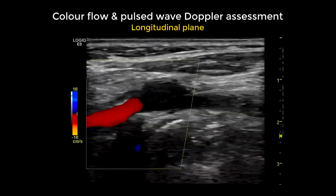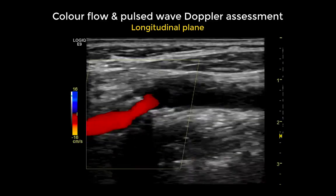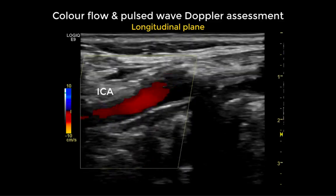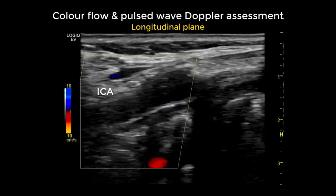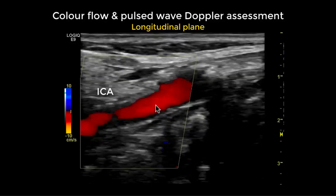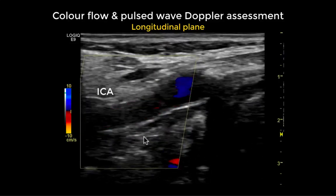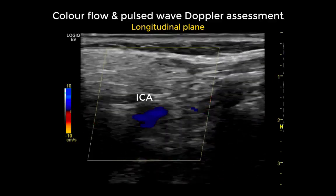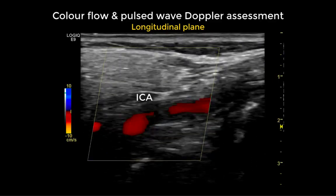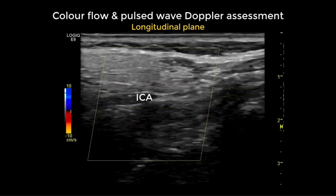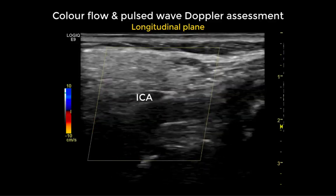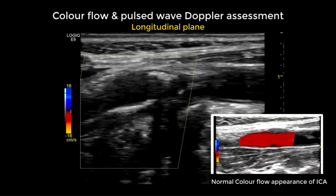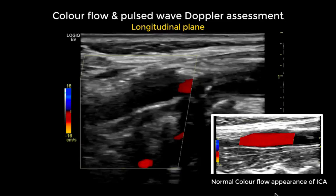We now continue the assessment into the internal carotid artery. Using colour flow within the internal carotid artery, we note that there is no complete filling and the colour pattern is alternating — with red and blue patterns visible. Since the brain is normally a low resistance territory, these alternating colour findings are suspicious of distal obstructive disease.